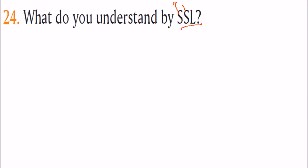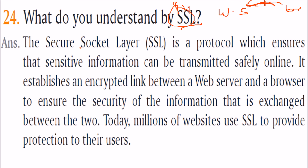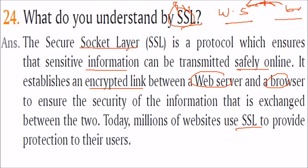What do you understand by SSL — Secure Socket Layer? You have a web server and a browser, and you need to ensure the transmission of data between them is secure. This is done through SSL. Secure Socket Layer is a protocol that ensures sensitive information can be transmitted safely online. It establishes an encrypted link between the web server and the browser. Today millions of websites use SSL. You may have seen HTTP and HTTPS — the S stands for Secure Socket Layer.